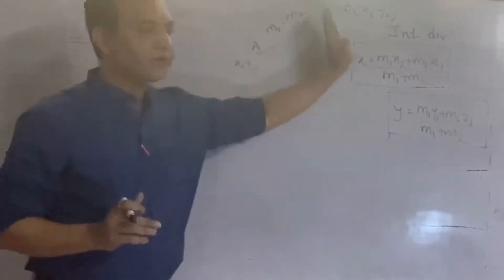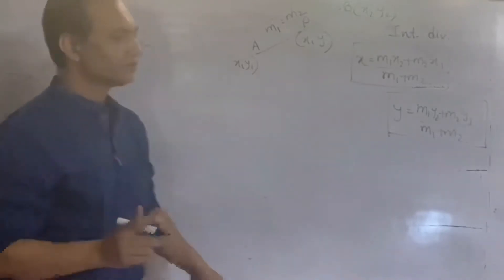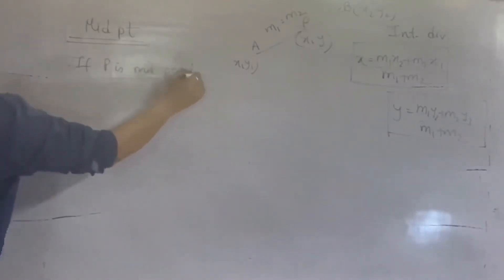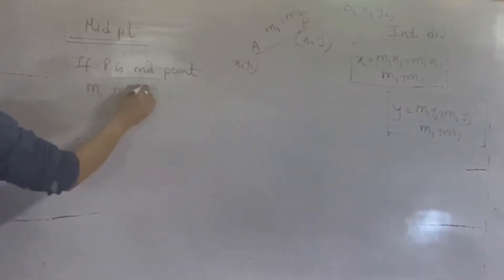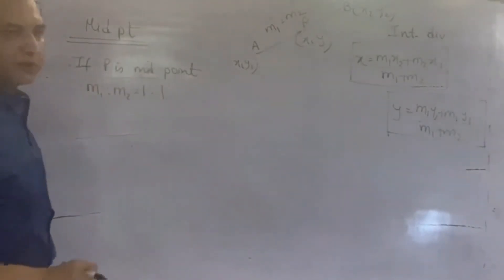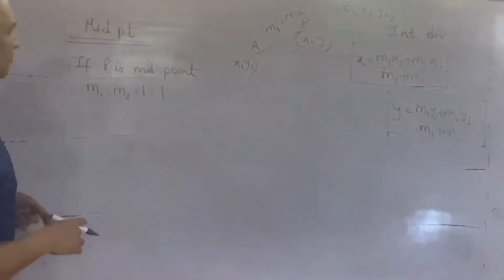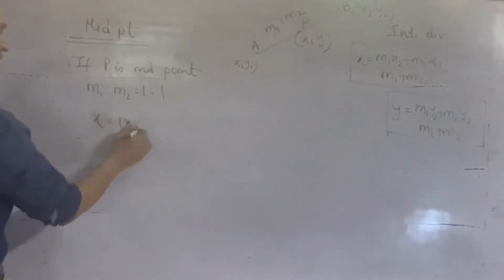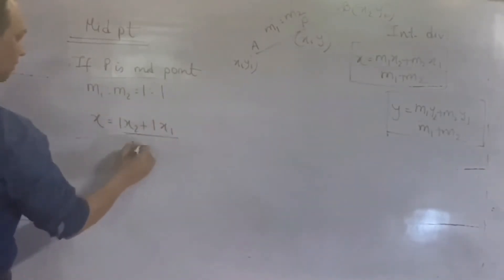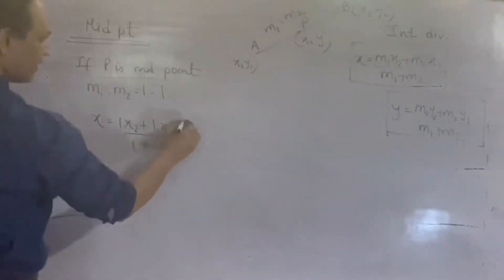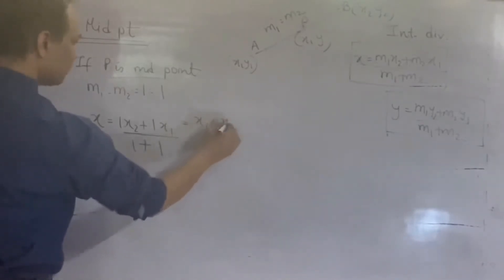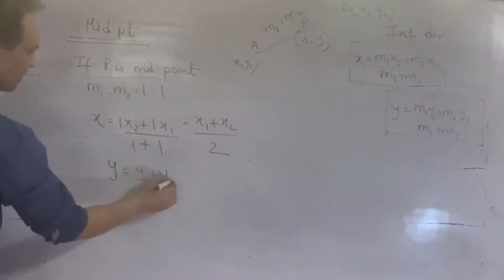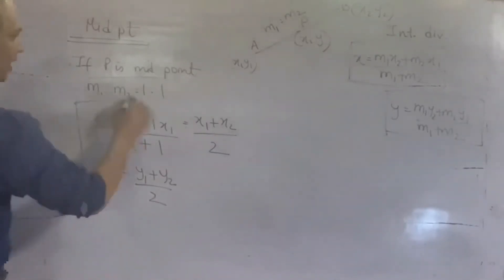यदि P Midpoint of AB है तो M1:M2 हो जाएगा 1:1। M1 और M2 की जगह 1,1 रख देते हैं। X = (1·X2 + 1·X1) upon (1+1) = (X1 + X2) upon 2। ऐसे Y वाले में रखेंगे तो आएगा Y = (Y1 + Y2) upon 2। यह हो गया हमारा Midpoint का formula।